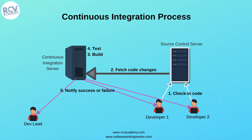Continuous integration means that as soon as there are changes done by developers working on the code or building functionality, and they check in that code to the source control server, the continuous integration process has a defined set of tools and machines or servers already in place with scripts.